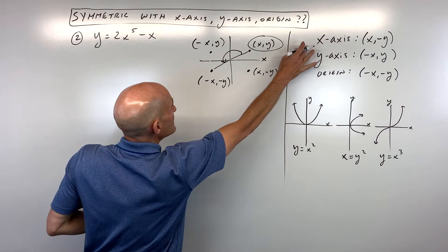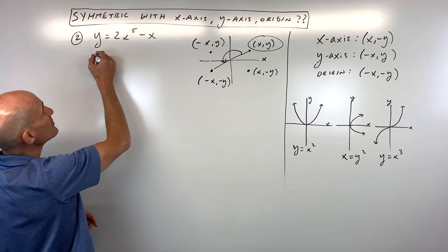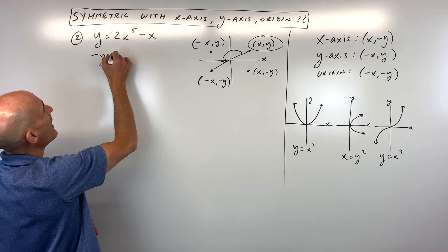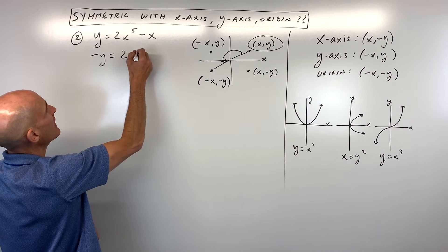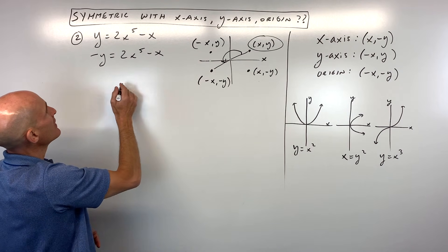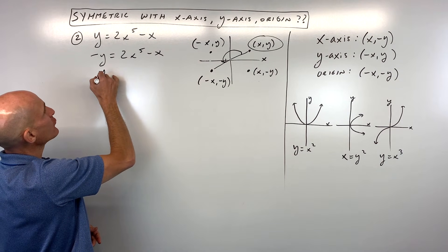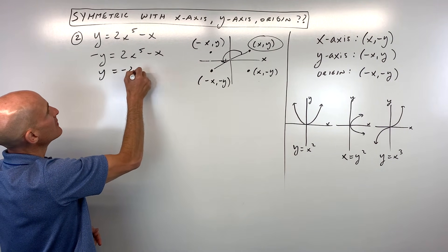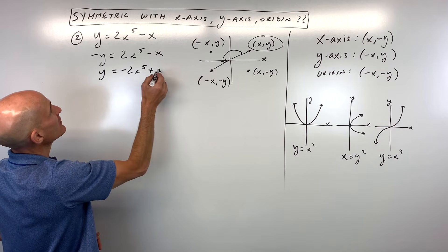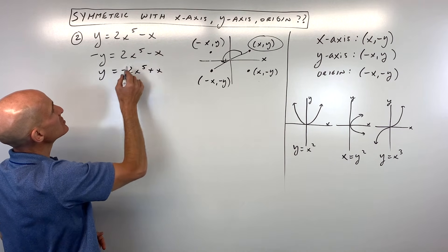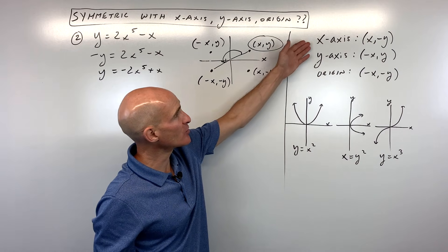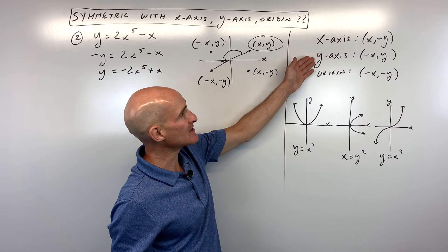For number two, let's start with x-axis symmetry. Replace y with negative y and x stays the same. Multiplying through by negative one — does this look like the original equation? No, the signs are the opposite, so it's not symmetric with respect to the x-axis.